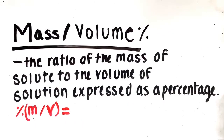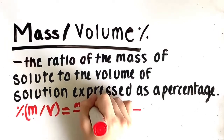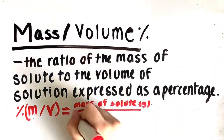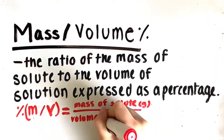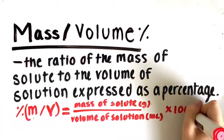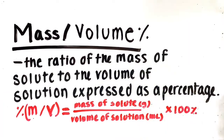Mass over volume percent is the ratio of the mass of a solute to the volume of a solution, expressed as a percentage. It is expressed in units of m/v percent. The equation is: m/v percent = (mass of solute in grams / volume of solution in milliliters) × 100%.